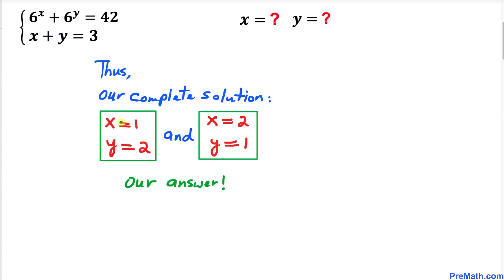So here we have our complete solution: the first solution is x equals 1 and y equals 2, and the other is x equals 2 and y equals 1. Thanks for watching and please don't forget to subscribe to my channel for more exciting videos. Bye!